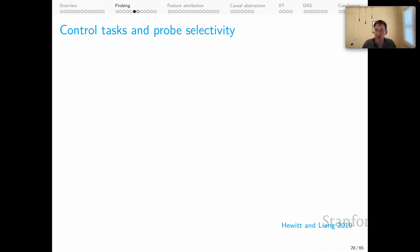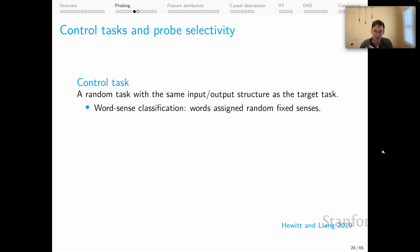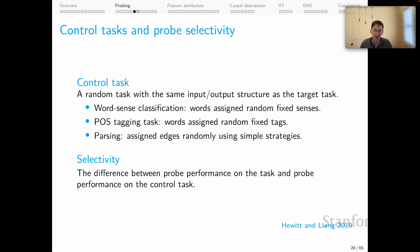To help address this, Hewitt and Liang introduced the notion of probe selectivity. And this is just going to help us calibrate to some extent how much information was actually in the target model. The first step here is to define a control task. This would be a random task with the same input-output structure as your target task. For example, for word sense classification, you could just assign words random fixed senses. For part of speech tagging, you could assign words to random fixed tags, maybe keeping the same tag distribution as your underlying part of speech data set. Or for parsing, you could assign edges randomly using some simple strategies to give you tree structures that are very different, presumably, from the ones in your gold data set. And then selectivity as a metric for probes. It's just the difference between probe performance on the task and probe performance on the control task. So you've baked in how well your model can do on a kind of random task. That's the idea.